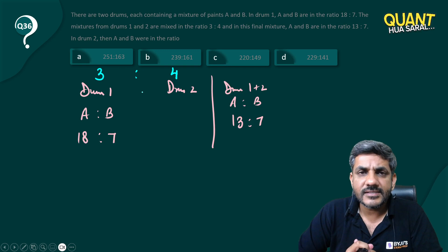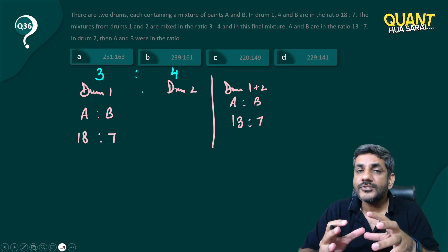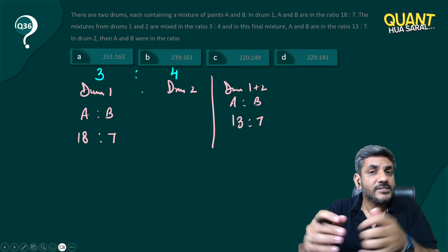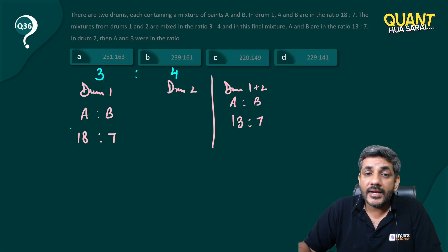Probably I would have discussed this before as well, that in ratios the sum of the numbers given in the ratios are very important. So when A:B is divided in a particular ratio, the sum becomes important.